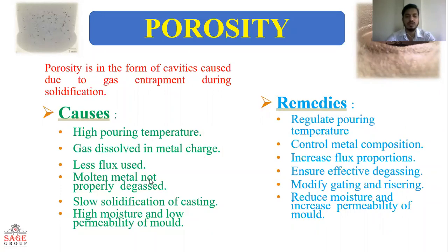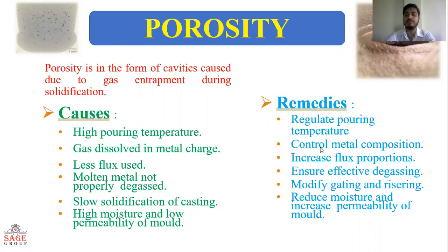The causes of porosity are: high pouring temperature, gas dissolves in metal charges, less flux used, molten metal not properly degassed, slow solidification of casting, high moisture, and low permeability of mold. Remedies include: regulate pouring temperature, control metal composition, and increase flux properties.